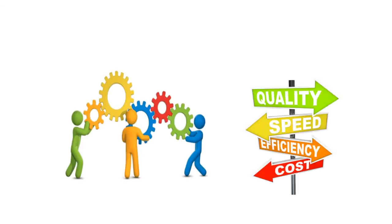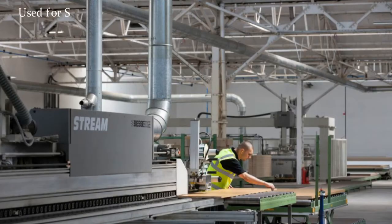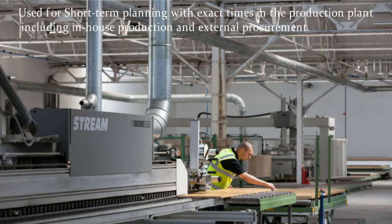Today we are going to see SAP Production Planning and Detailed Scheduling, that is PP/DS, on SAP S4 HANA. PP/DS is used for short-term planning with exact times in the production plan, including in-house production and external procurement.